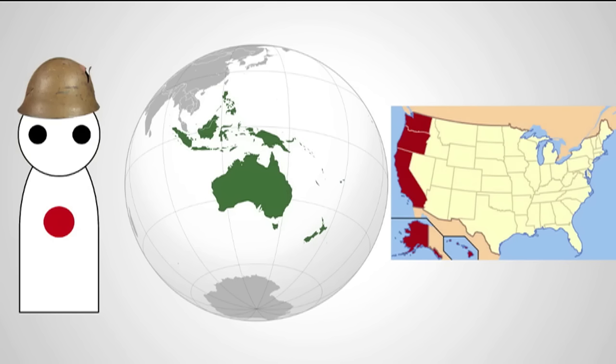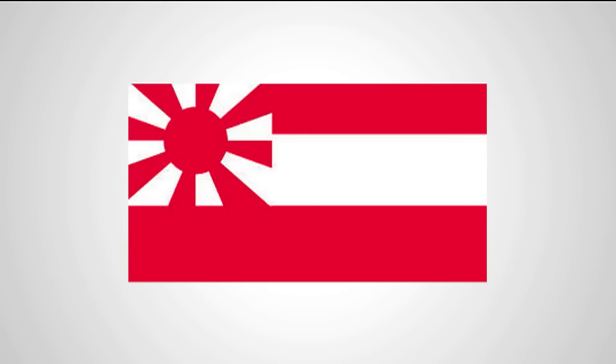In the following decades, the world becomes much different as the Axis face relatively no major opposition to their plans. Japan expands its borders to Oceania, Australia, mainland China, and all of Southeast Asia. Japan sets up a white puppet government on the west coast called the Pacific States of America.